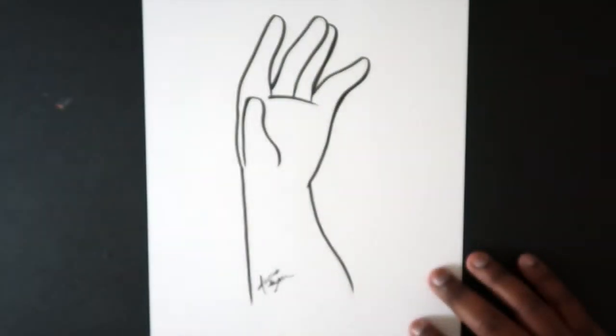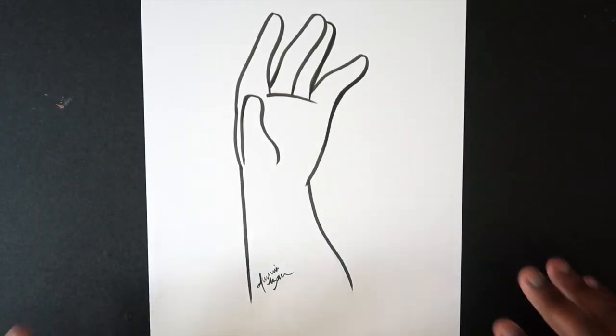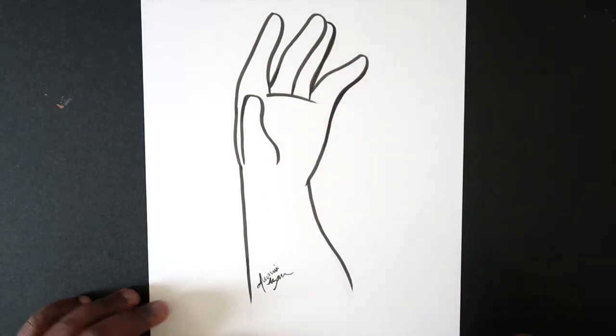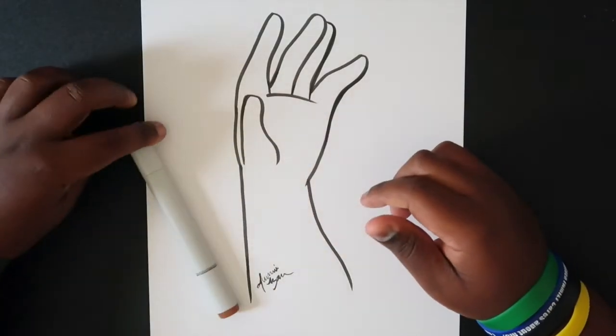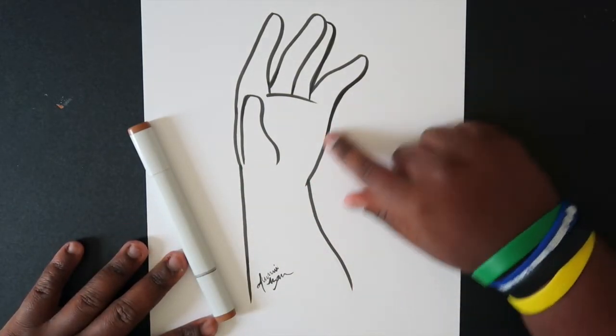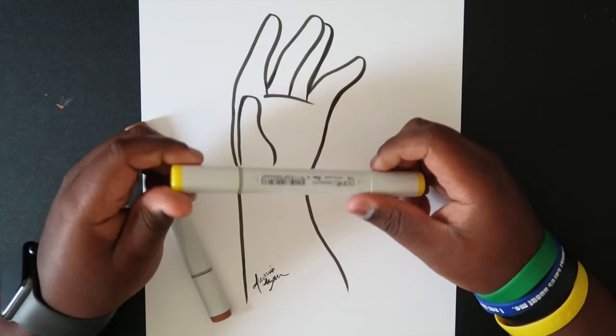First thing I'm going to do is you're going to want to pick a base tone for your hand. What color is the hand going to be originally? I'm going to grab E23 and then it's up to you to decide which color you want to add the shine on. I'm going to pick Y06 as the yellow.